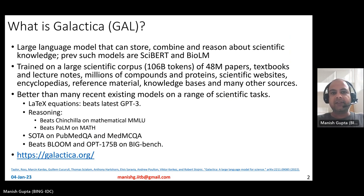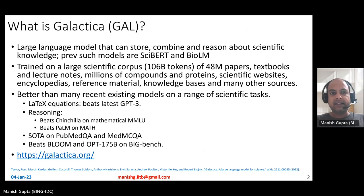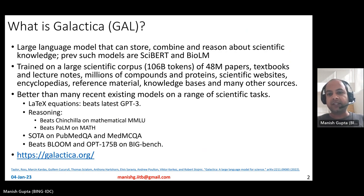In short, Galactica is a large language model that can store, combine, and reason about scientific knowledge. There have been other previous large language models built for scientific encoding, like SciBERT and BioLM. Galactica has been trained on a very large scientific corpus consisting of 106 billion tokens, extracted from 48 million papers, textbooks and lecture notes, millions of compounds and proteins, scientific websites, encyclopedias, reference material, knowledge bases, and many other sources.